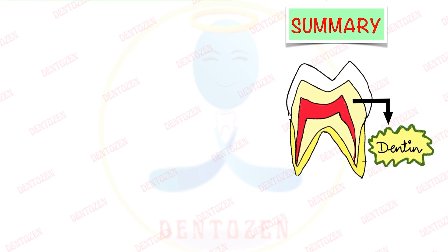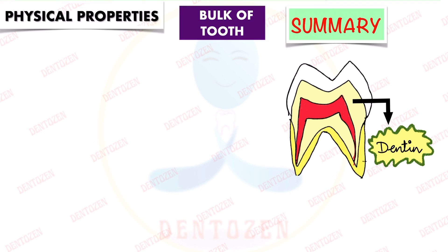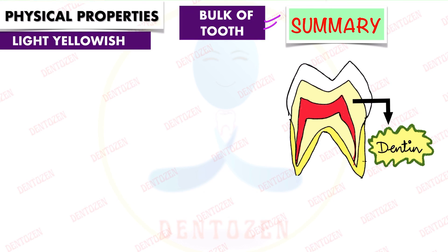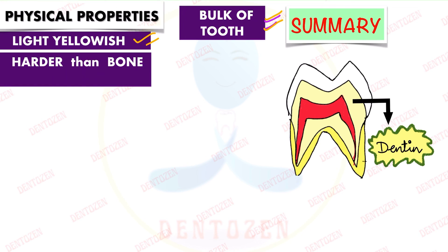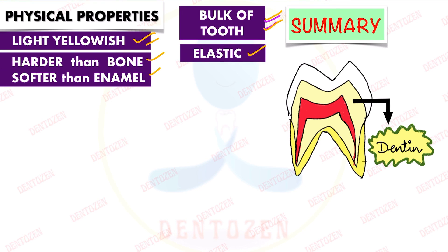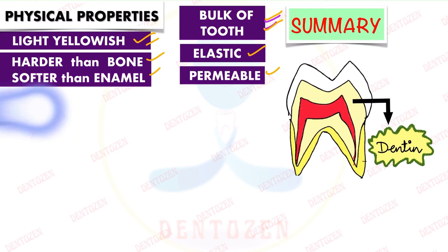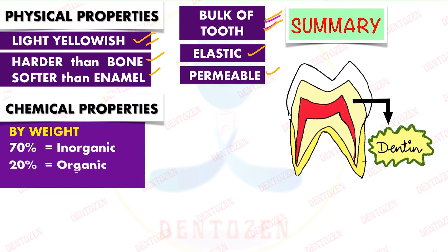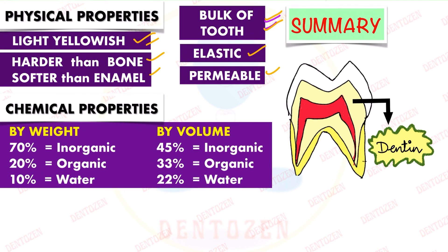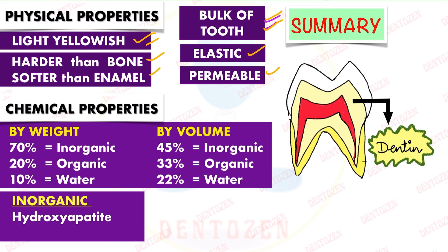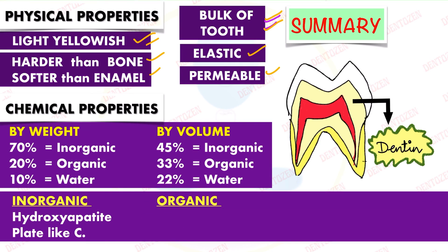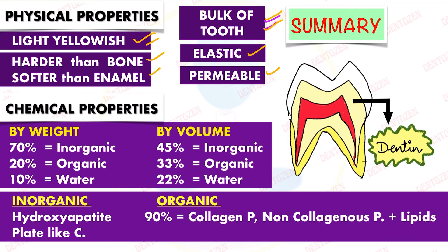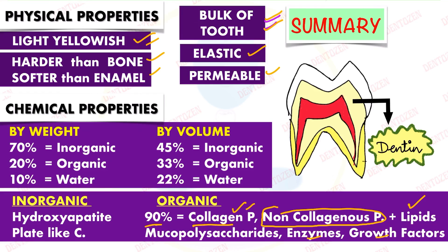In summary, the physical properties of dentine are: it forms the bulk of the tooth, has a light yellowish color, is harder than bone but softer than enamel, is elastic (viscoelastic), and is permeable. The chemical composition: by weight approximately 70% inorganic, 20% organic, and 10% water. The major inorganic component is hydroxyapatite in small plate-like crystals. The organic component is 90% collagen (mainly type 1), plus non-collagenous proteins, lipids, mucopolysaccharides, enzymes, and growth factors.